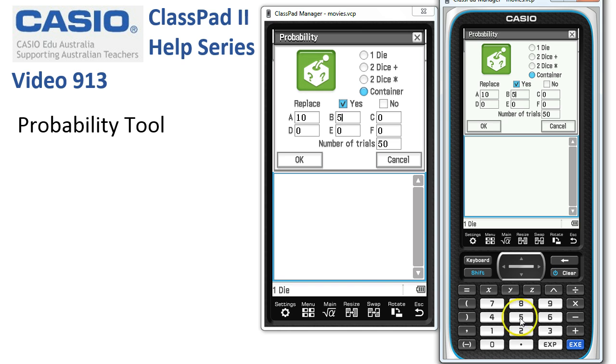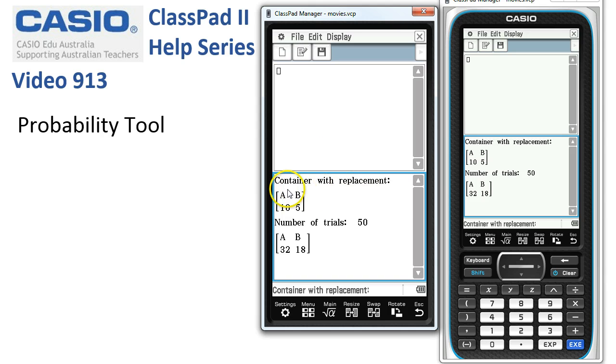And so the Bs will represent the red balls and the A's are our blue balls. And when we say OK, container with replacement, then you can see the number of trials is 50 and we've got 32 of the type A and 18 of the type B.